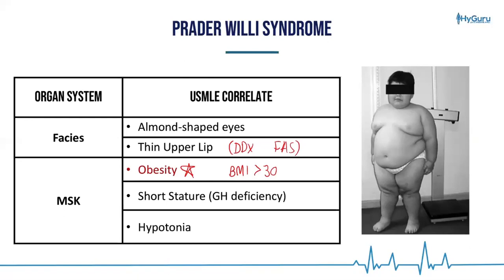These patients are also going to have short stature, usually because of a hypothalamic disorder such as growth hormone deficiency, and they are going to be very hypotonic. The defining sentinel feature of this syndrome, however, is obesity.